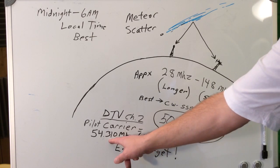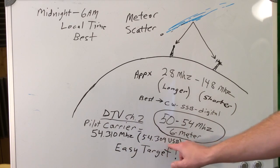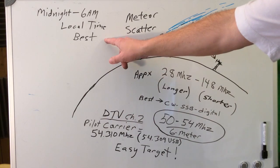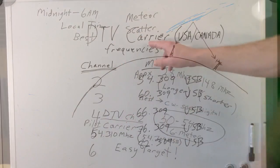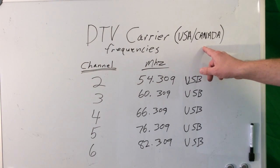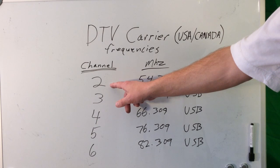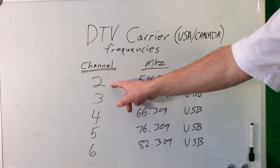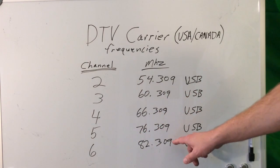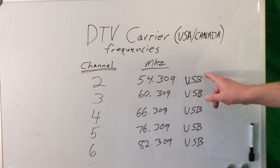Just above that are the digital TV channels. 54.309 MHz in upper sideband mode is good to monitor — it makes an easy target, and the best time is between midnight and 6 AM. This is a list of the digital TV carrier frequencies for the US and Canada. I like to use channel 2 locally; I have less interference there and no local stations on that channel. You want to tune to one of these frequencies in upper sideband mode on your receiver.